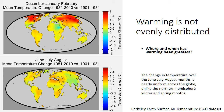The other thing to note is that if you compare changes in winter temperatures to changes in summer temperatures, summer temperature changes are pretty evenly distributed and not so large. The largest changes in temperature are occurring in winter. So warming is greatest in the winter and also greatest in high-latitude areas.